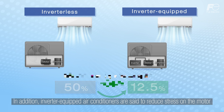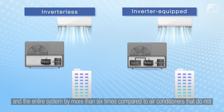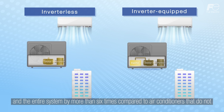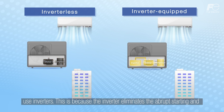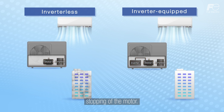In addition, inverter-equipped air conditioners are said to reduce stress on the motor and the entire system by more than six times compared to air conditioners that do not use inverters. This is because the inverter eliminates the abrupt starting and stopping of the motor.